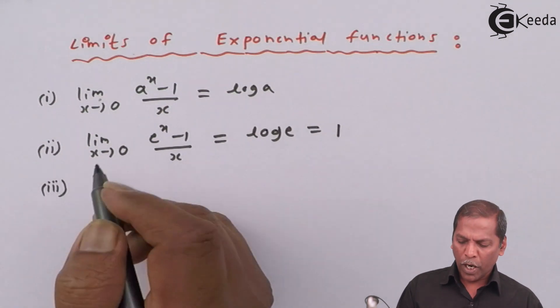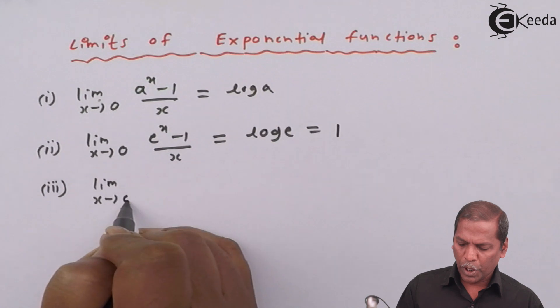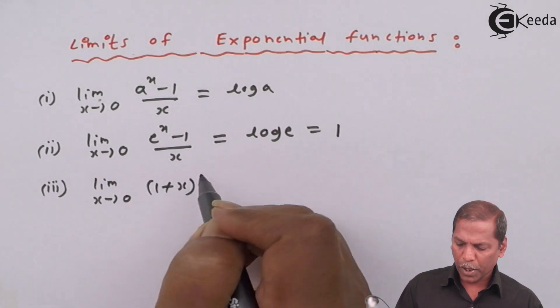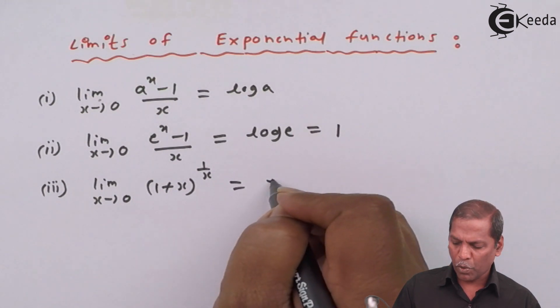Third formula is limit x tends to 0, 1 plus x raised to 1 by x, is equal to e.